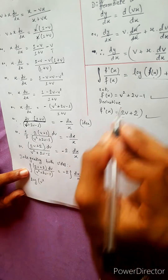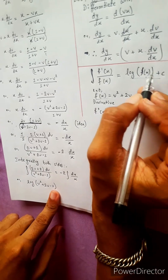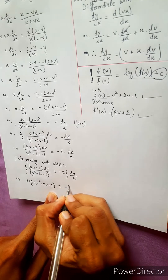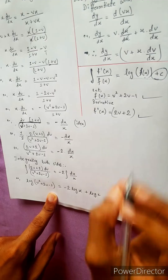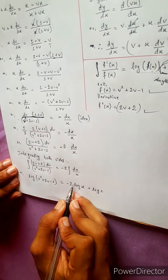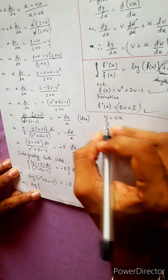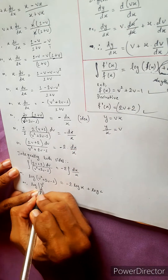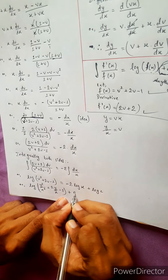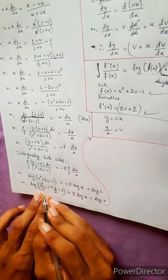Integrating both sides: log(v² plus 2v minus 1) equals minus 2·log(x) plus log(c), where log c is the integration constant. Substituting back v equals y/x: log((y/x)² plus 2(y/x) minus 1) equals minus 2·log(x) plus log(c). This gives log(y²/x² plus 2y/x minus 1), and we bring minus 2·log(x) to the left.